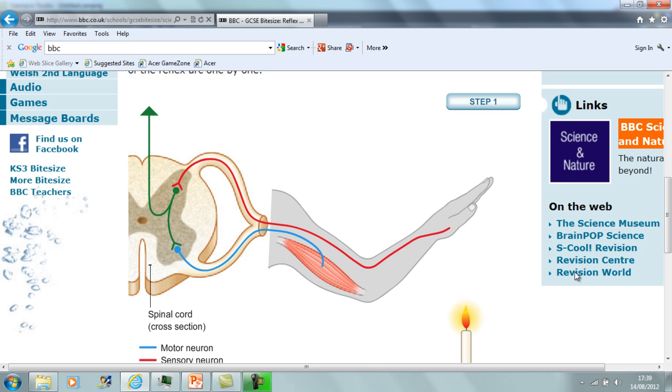With the reflex arc, the first thing that happens is the hand comes into contact with something hot, and in this case, something hot is the candle. The stimulus, which is the change in the environment, which is the heat in this case, is picked up by a receptor in the hand or a pain receptor in the hand. This can then send the impulse up the sensory neuron towards the central nervous system.